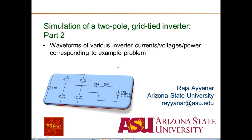This is a continuation of the simulation that we are doing on the example problem on a two-pole grid-tied inverter. In part one, we looked at most of the waveforms corresponding to the power flow from the DC side to the AC side. We will look at some of the remaining simulation examples corresponding to that case and then take up the reverse power flow case.